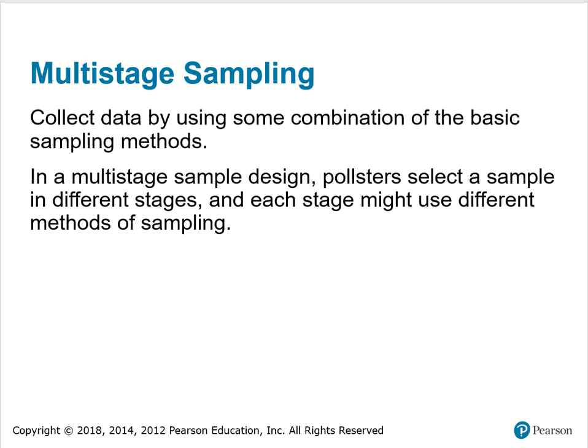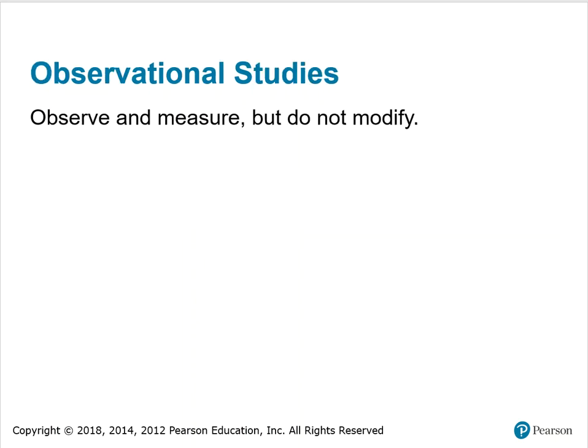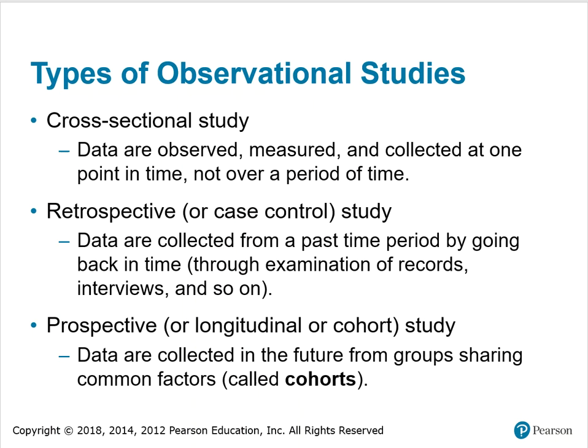Multi-stage sampling occurs when you collect data by using some combination of the basic sampling methods. In a multi-stage sample design, pollsters select a sample in different stages, and each stage must use different methods of sampling. For observational studies, you observe and measure but don't modify. There are several types: a cross-sectional study, in which data are observed, measured, and collected at one point in time; retrospective or case-control studies, where data are collected from a past time period by going back through records and interviews; and prospective, longitudinal, or cohort studies, in which data are collected in the future from groups sharing common factors, also called cohorts.